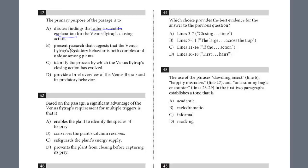If you look at the other choices, you'll see these aren't accurate. Present research that suggests that the Venus flytrap's predatory behavior is both complex and unique among plants. This is not what the whole passage is about, and we don't have any evidence that it's unique among plants. Identify the process by which the Venus flytrap's closing action has evolved. There's no discussion of the evolution. Provide a brief overview of the flytrap and its predatory behavior. No, it's a much more specific passage about how exactly it closed and scientific evidence based on experiments as to how that was done. So the answer is A.